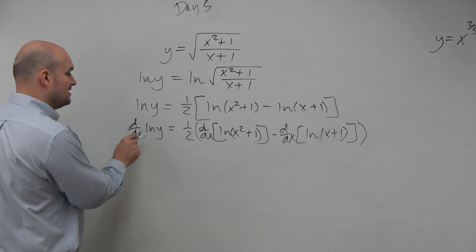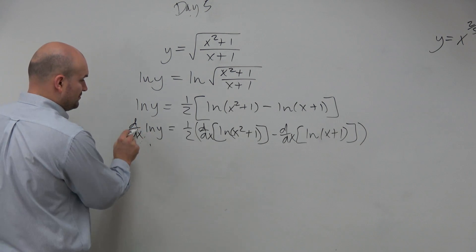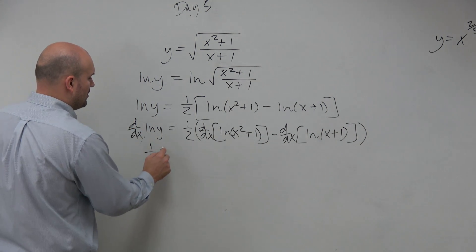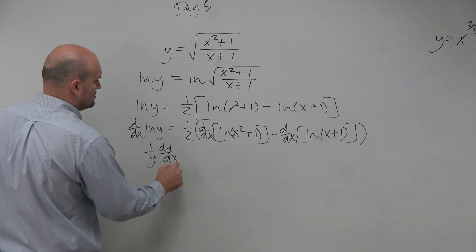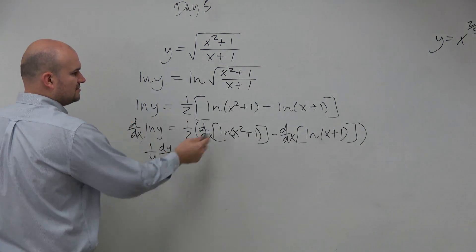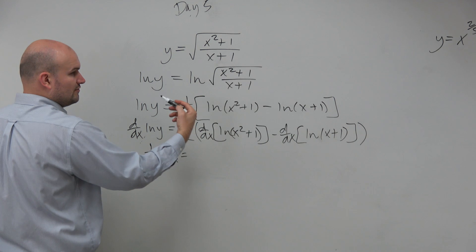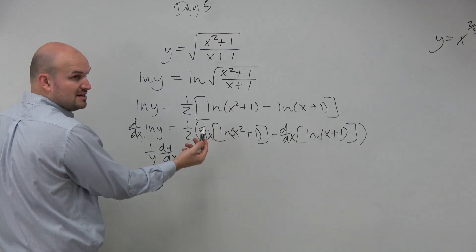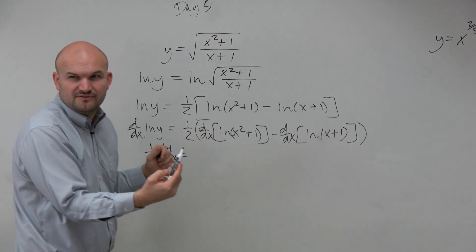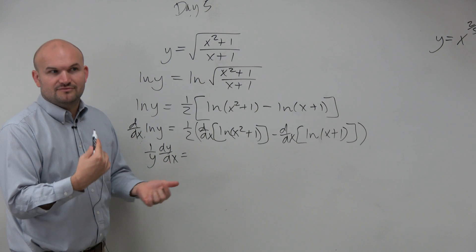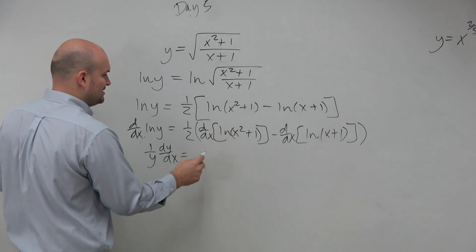You could write outside of exponent. But again, ln of y with respect to x is 1 over y dy dx. The one half is staying out. The derivative here is going to be 1 over u, or basically u prime times 1 over u. You guys kind of familiar with it now?